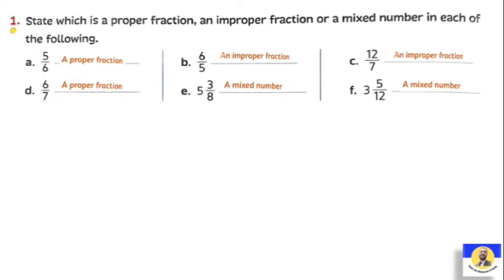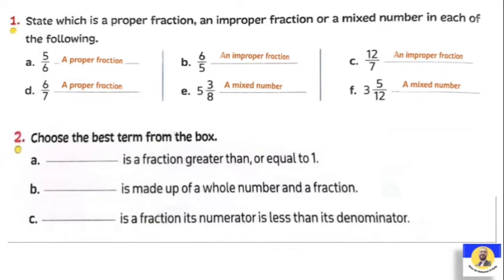So now we know what a proper fraction is, what an improper fraction is, and what a mixed number is. An improper fraction is a fraction greater than or equal to one.